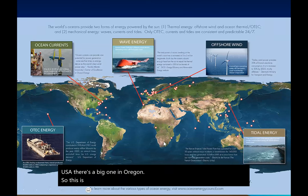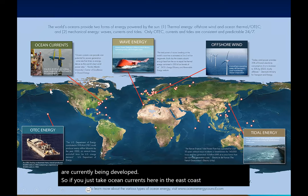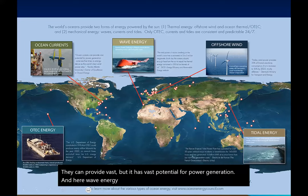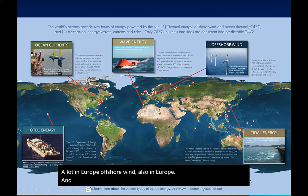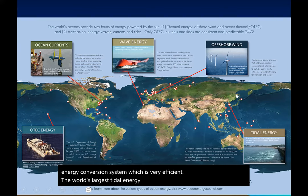Here is the world map, and you can see all along the coastline the technologies currently being developed. Taking ocean currents on the east coast of the USA and in Alaska, they have vast potential for power generation. Wave energy is shown a lot in Europe, as is offshore wind. In Hawaii, the United States Department of Energy pioneered OTEC, which is very efficient. The world's largest tidal energy plant was built in South Korea.